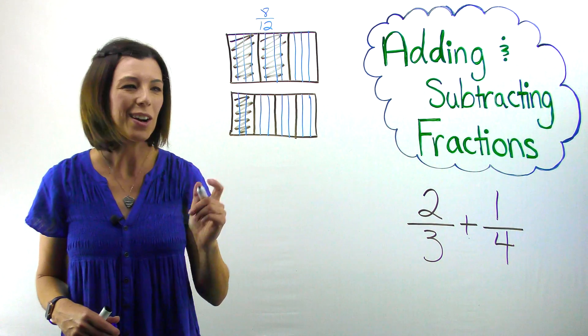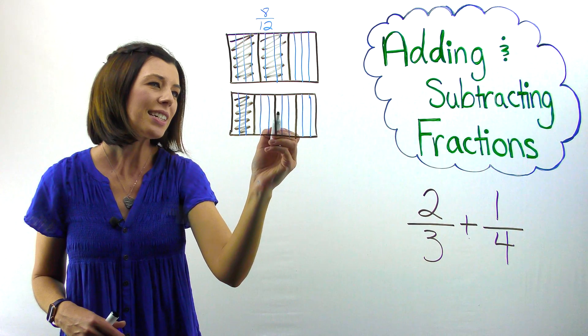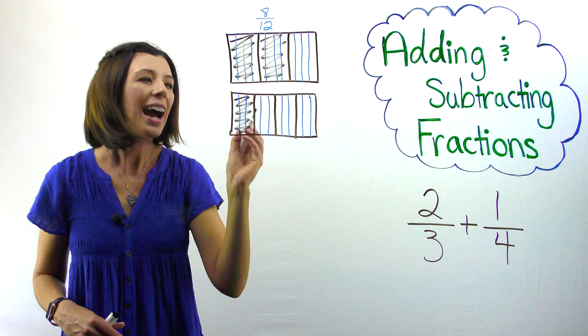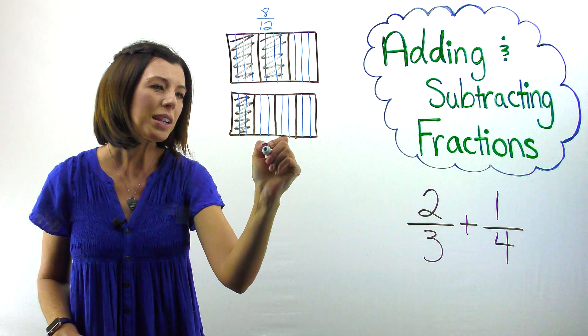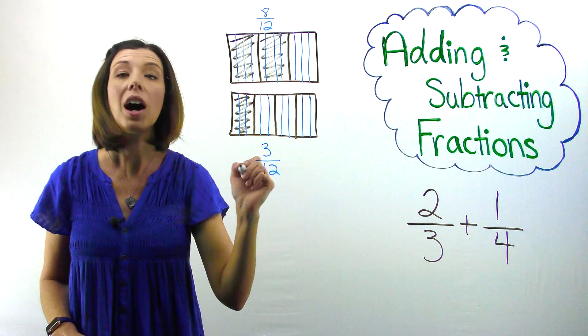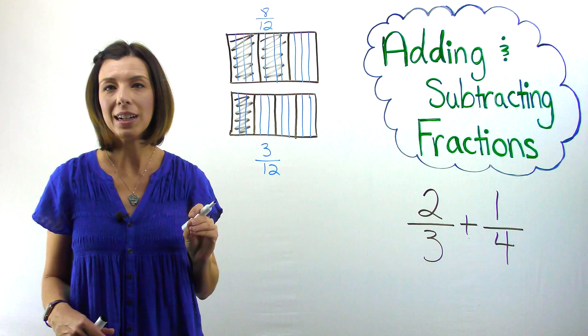Just to double check, let's count them. One, two, three, four, five, six, seven, eight, nine, ten, eleven, twelve. I see that I have three copies of a twelfth shaded in my model here.